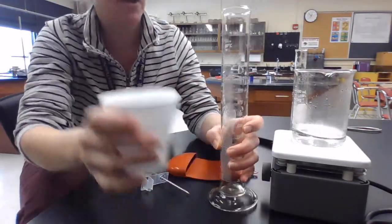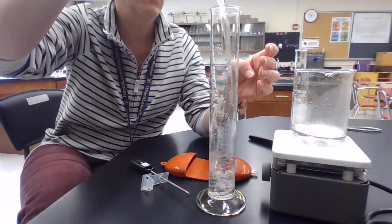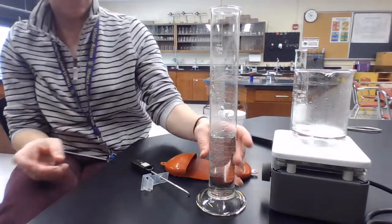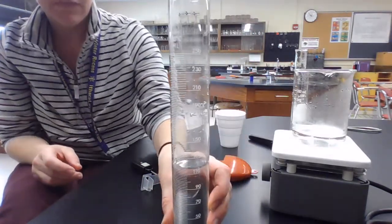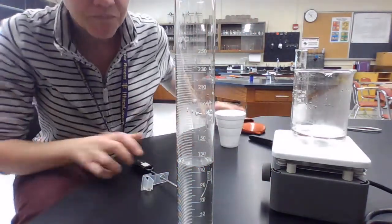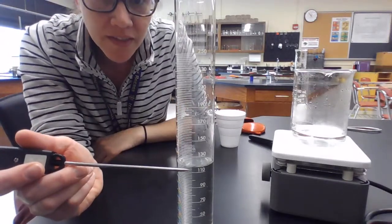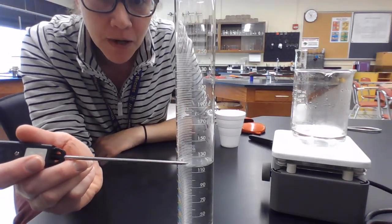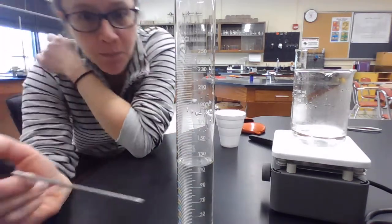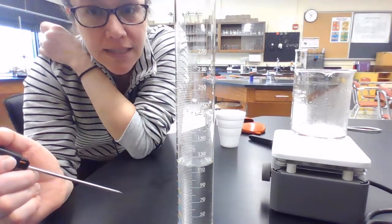So I'm going to use this larger graduated cylinder. Okay. Now I wonder if you can read that. On this cylinder, every mark is 2 milliliters because it's a much larger cylinder. So to me that's looking like 116.